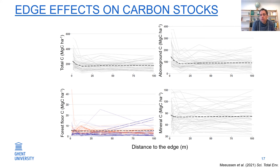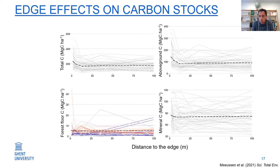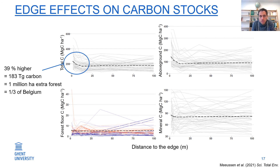Edge effects also persist in carbon stocks. In the same plots in the ForMiCa project, we quantified carbon stocks in the aboveground compartment, in the forest floor litter, and in the mineral soil. Especially in the mineral soil and aboveground compartment, there is more carbon closer to the edge. Summing to total carbon, there is on average 40% more carbon stored at the edge. Extrapolating across Europe, this amounts to no less than 180 teragram of carbon — the equivalent of the carbon in 1 million hectares of extra forest, or one third the size of Belgium — stored in these edges, but often not accounted for.